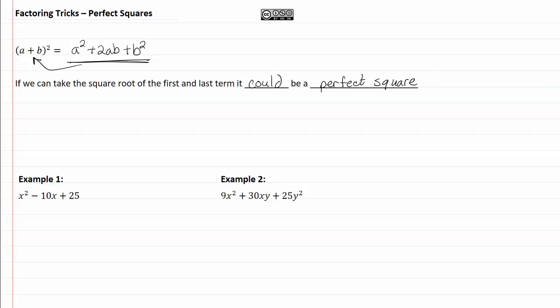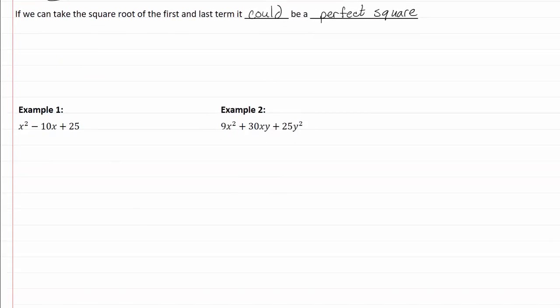Let's take a look at our two examples. I can take the square root of the first term, the square root of x squared is just going to be x. If I take the square root of twenty-five, I get five.